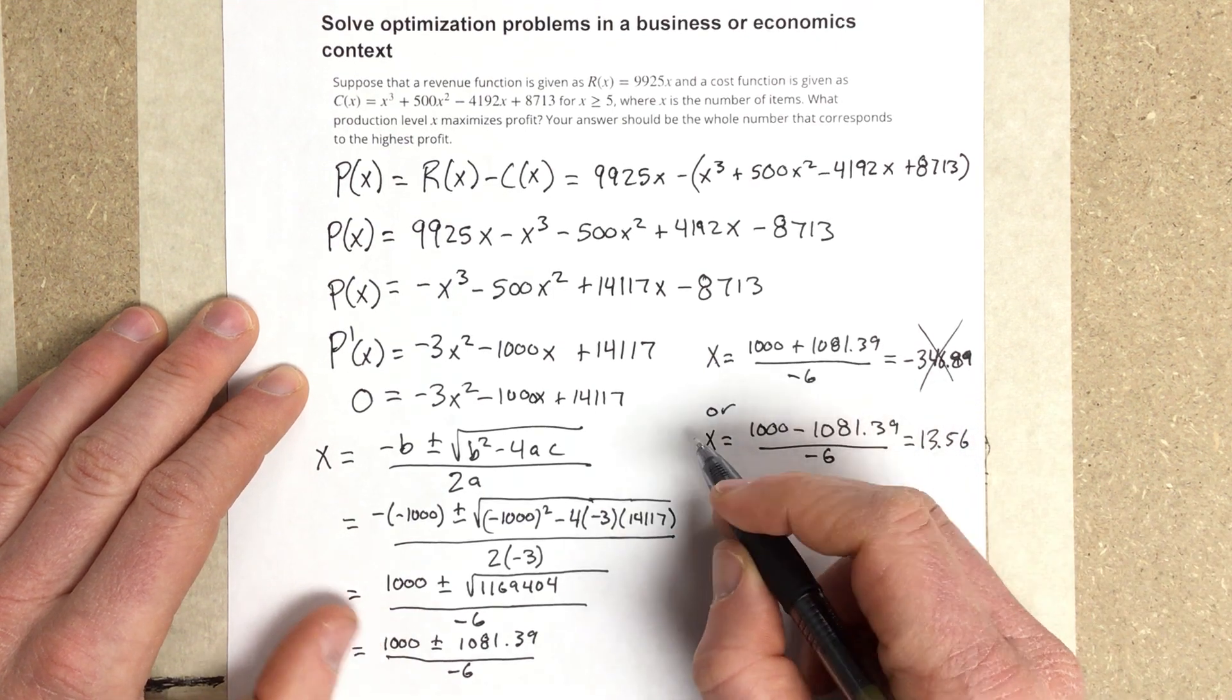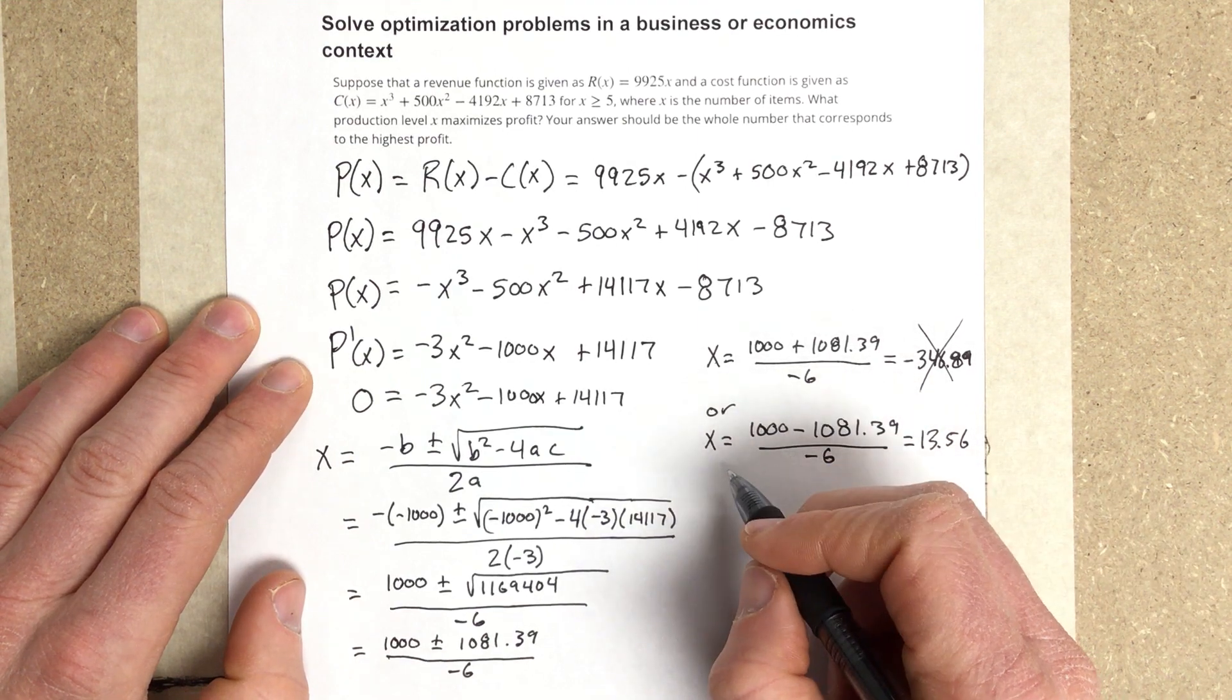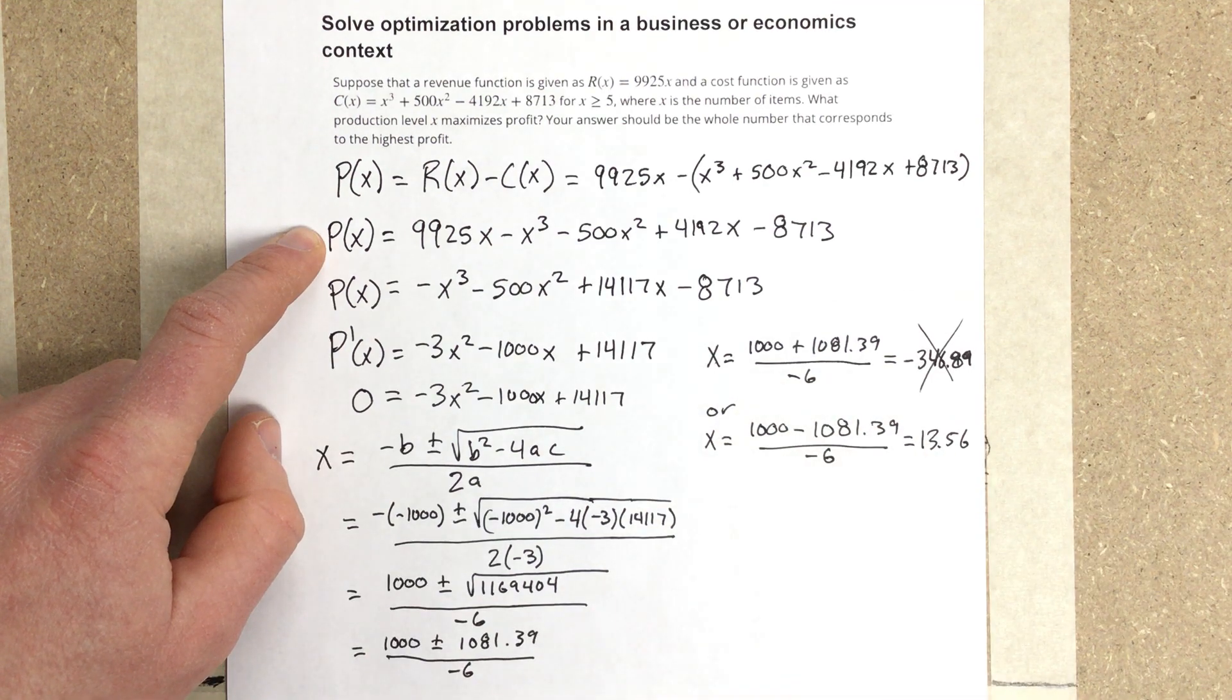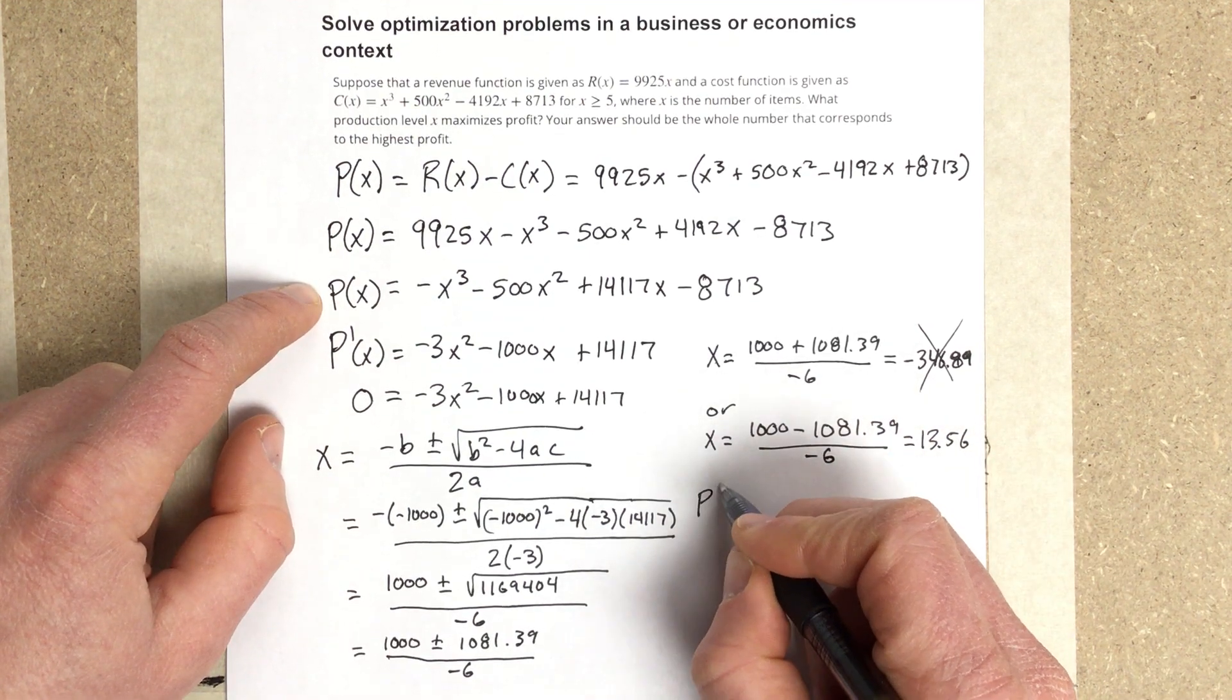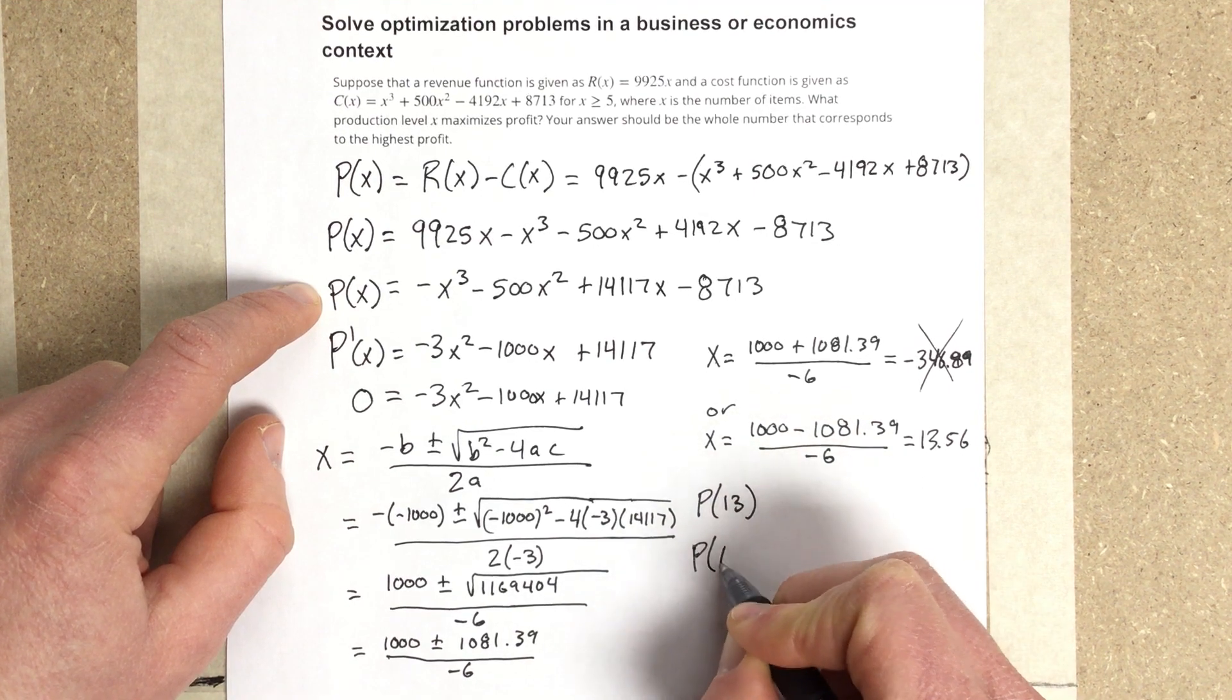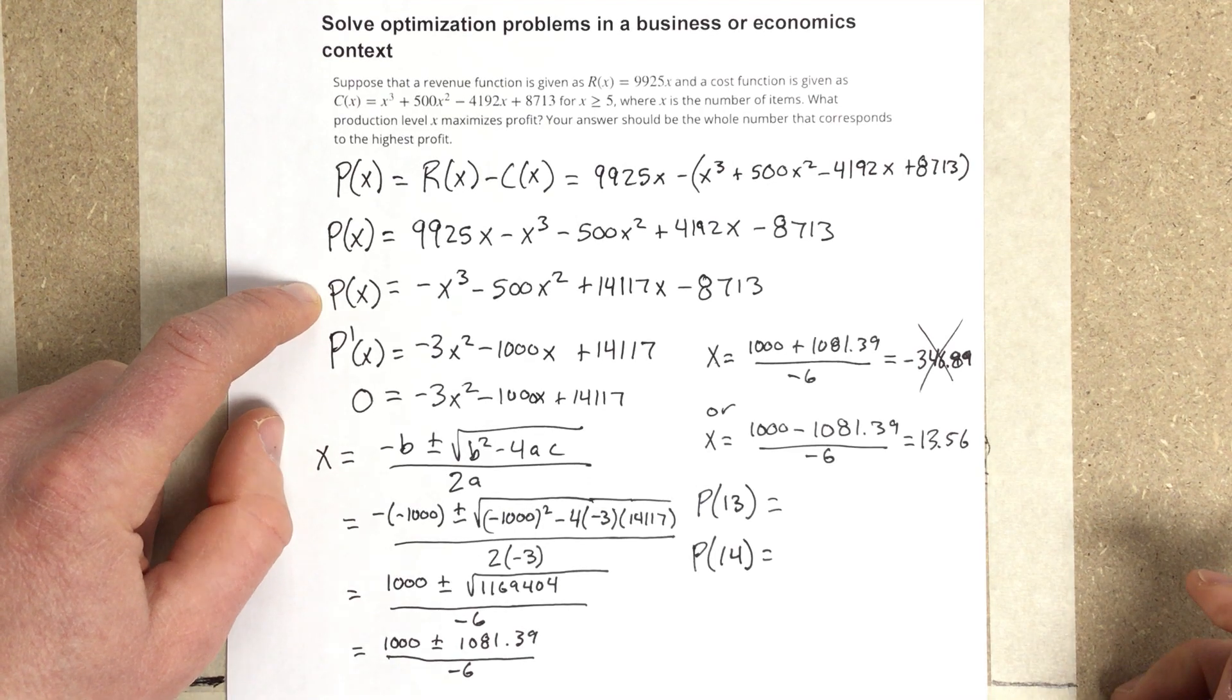So what we need to do is plug in for our original equation P(x). We're going to plug in both 13 and 14. Using this equation, we're going to calculate P(13) and P(14). See which one's higher and that will be our maximum profit.